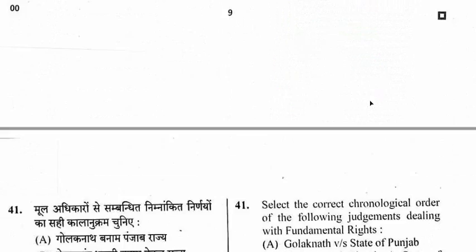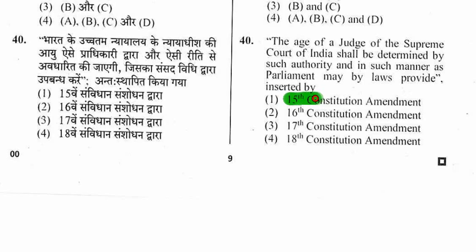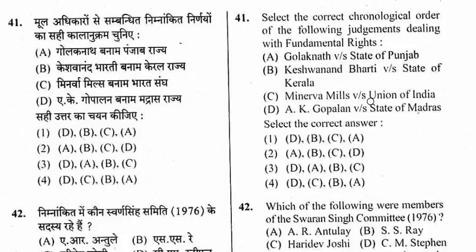Question 41: Select the correct chronological order of the following judgments dealing with fundamental rights — Golaknath vs State of Punjab, Kesavananda Bharati vs State of Kerala, Minerva Mills vs Union of India, and A.K. Gopalan vs State of Madras. The right option is option 3: D, A, B, C — first AK Gopalan, then Golaknath, then Kesavananda Bharati, then Minerva Mills.